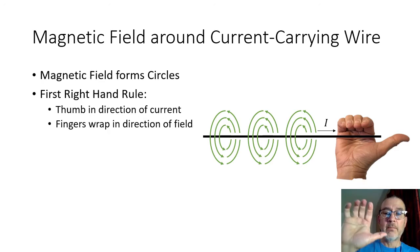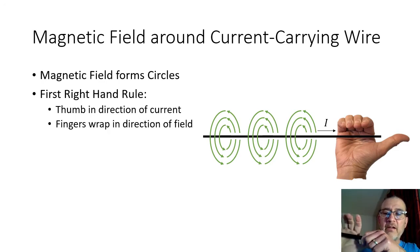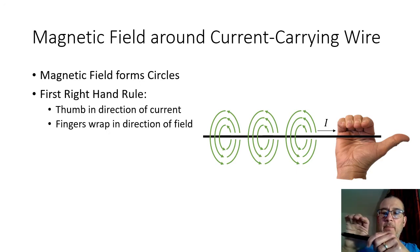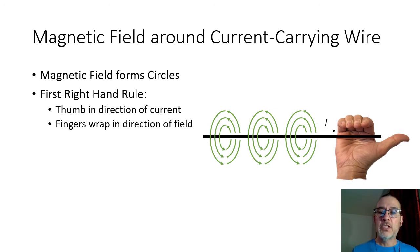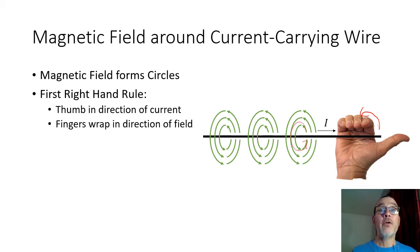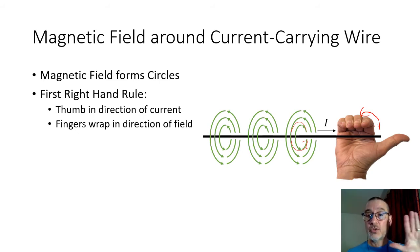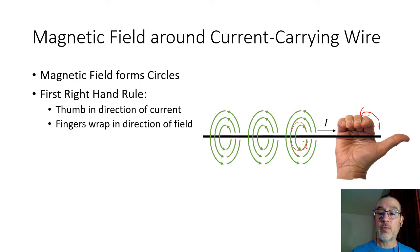With the thumb pointing to the right, my fingers would be wrapping around. On the back of the wire, the magnetic field would be pointing in the upwards direction, then it would come across the top, and then in the front of the wire it'd be pointing in a downwards direction. So that's what's showing here — as the fingers are wrapping up and around the wire, we get the circles of the magnetic field around the wire. Now you have to use your right hand. Lefties, it's called the right-hand rule, so make sure you're using your right hand.